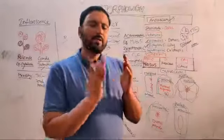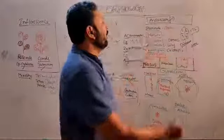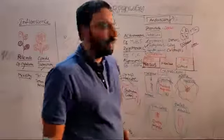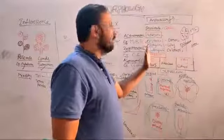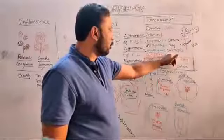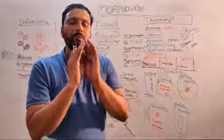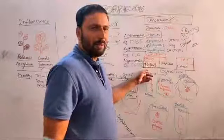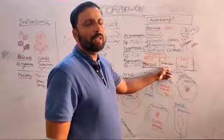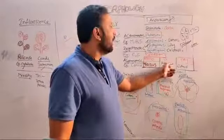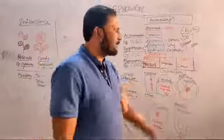Union of stamens: when stamens are fused with other floral parts it is called adnation; fusion among stamens themselves is called cohesion. When stamens are fused with petals it is called epipetalous — example Datura. When stamens are fused with tepals it is called epiphyllous — example lily. When stamens are fused with gynoecium it is called gynandrous — example Calotropis. In cohesion: filaments fused into one bundle is monadelphous (example Hibiscus); two bundles is diadelphous, present in Fabaceae (example Dolichos, Tephrosia, Pisum sativum); many bundles is polyadelphous — example Citrus.